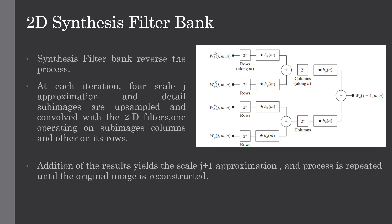Synthesis filter bank reverses the process of the analysis filter bank. At each iteration, four scale j approximation and detailed sub-images are upsampled and then convolved with 2D filters. One operates on the sub-images columns and other operates on its rows. Addition of these results would yield the scale approximation of j+1 and process is repeated until the original image is reconstructed.